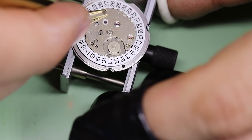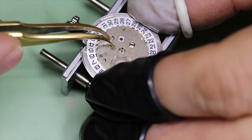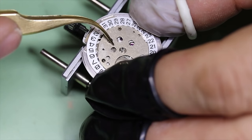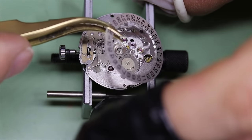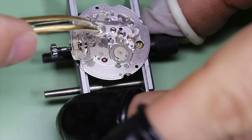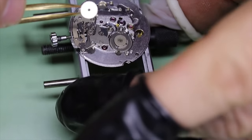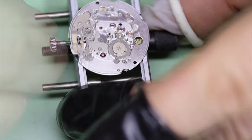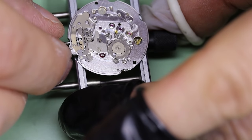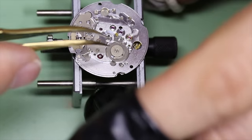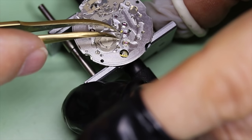It is general practice to recommend that you don't use the quick set date between nine o'clock in the evening and three o'clock in the morning. Of course, newer watches and this one have this kind of safety built in. Still, it's a good habit to keep the hands at the bottom of the dial if you're using the quick set.